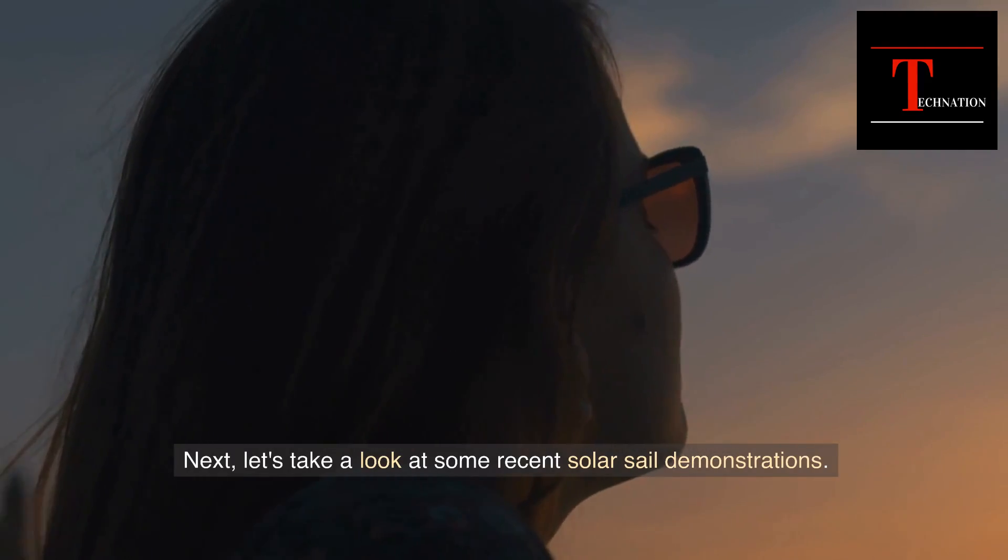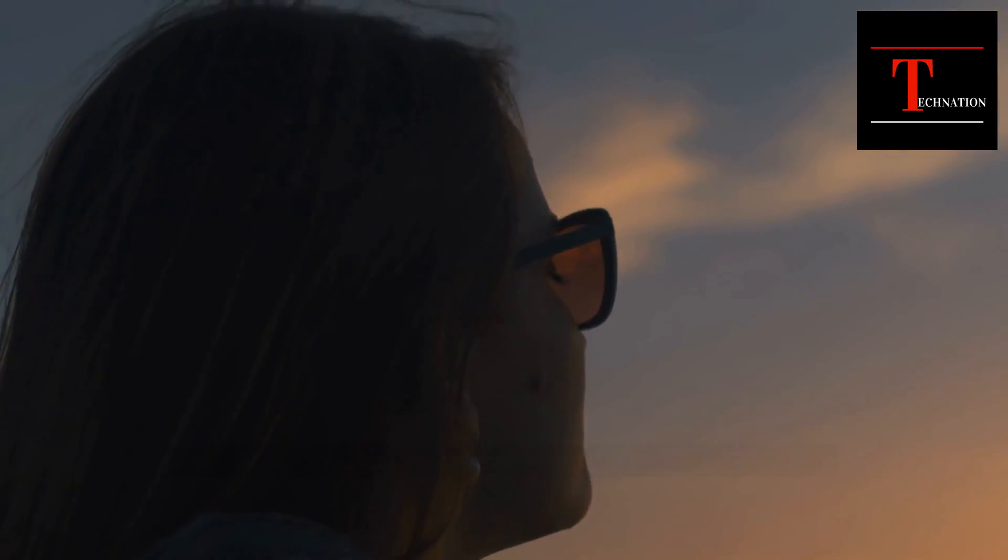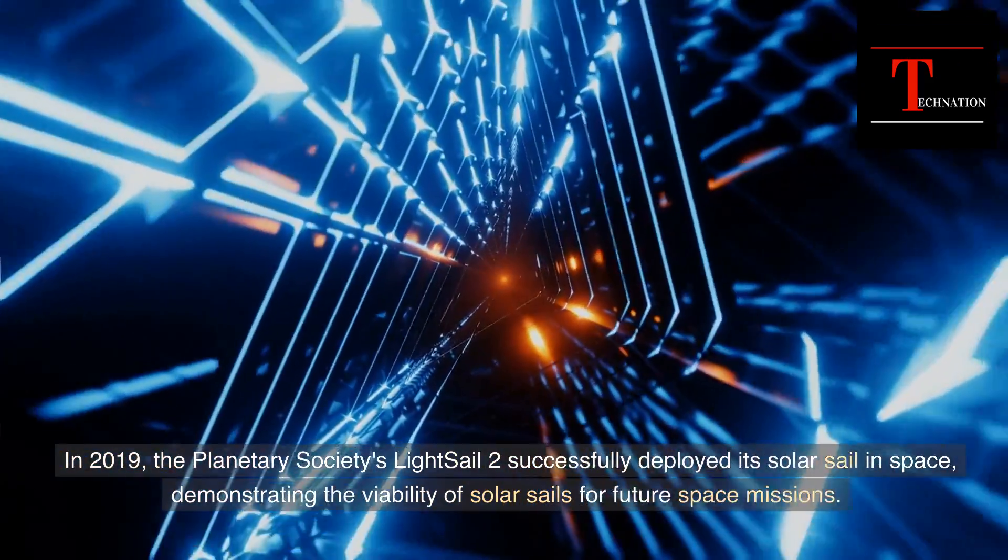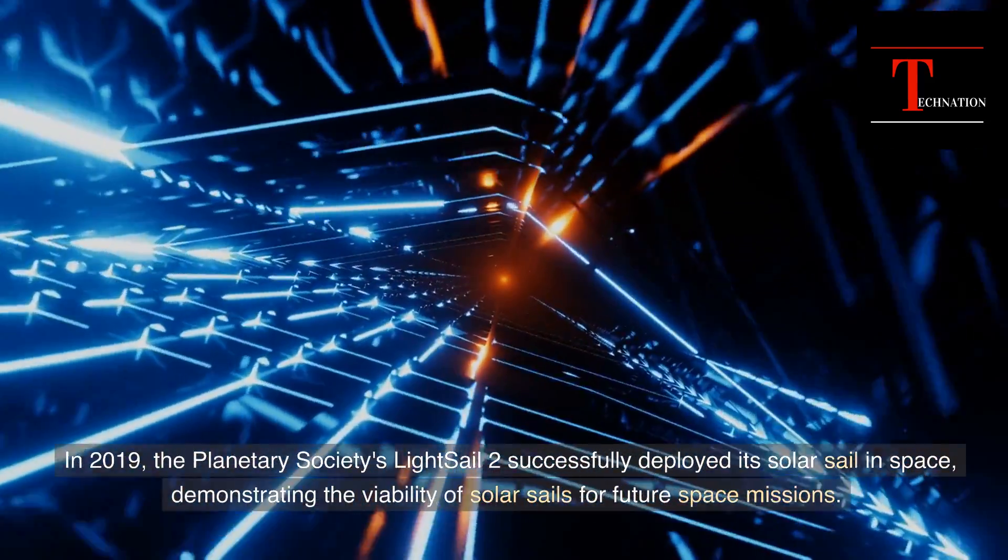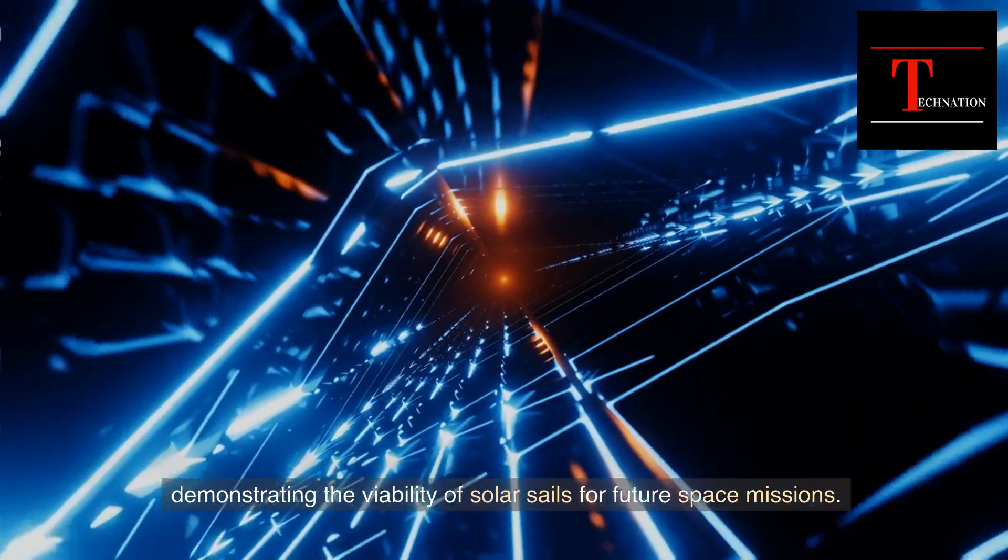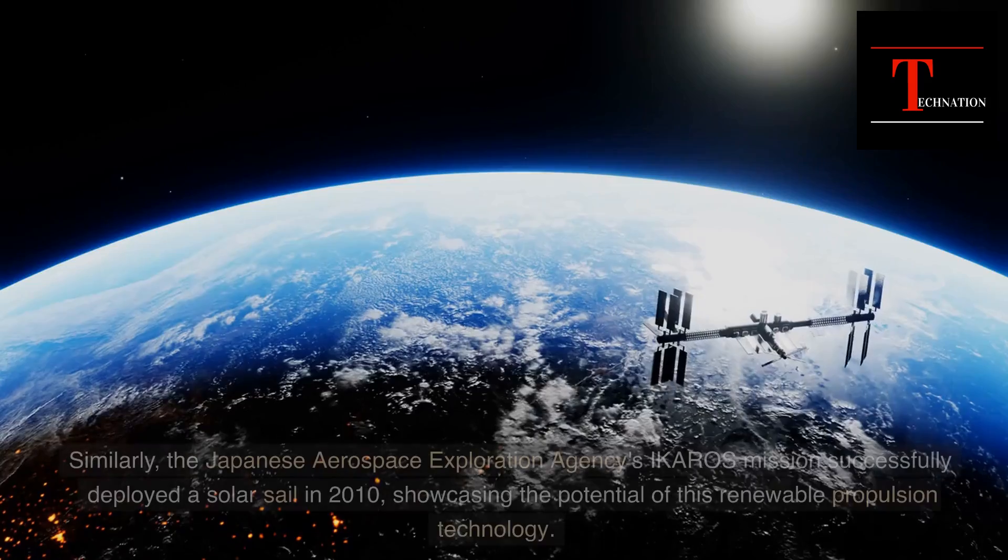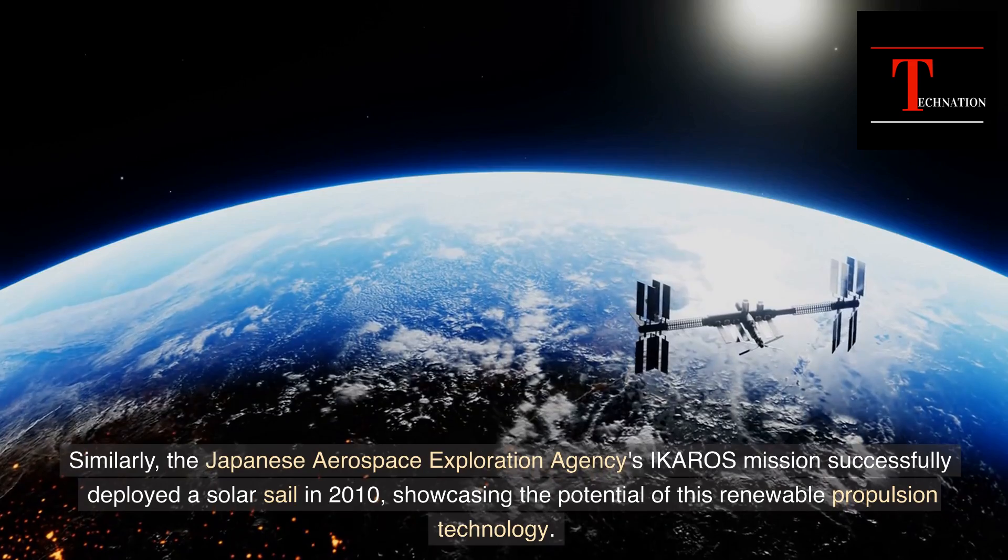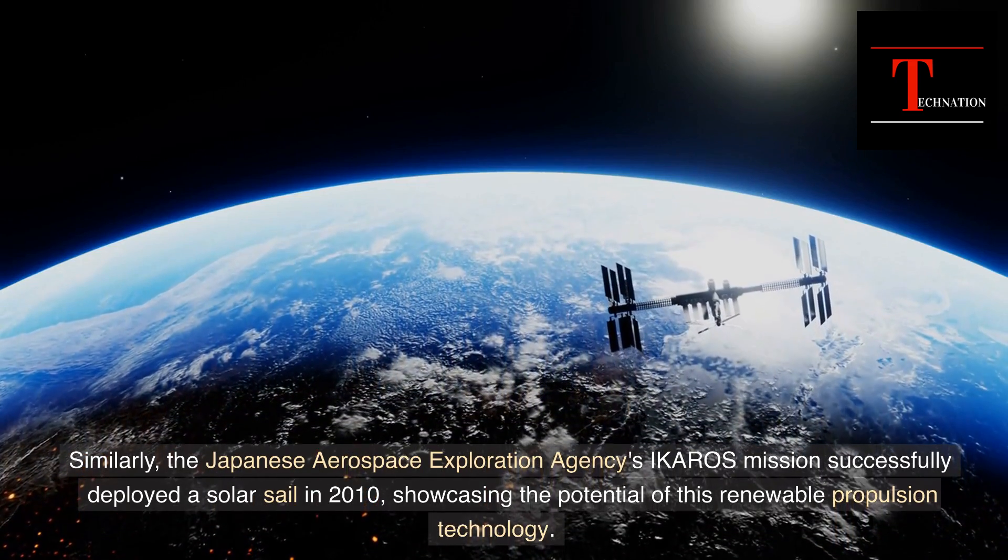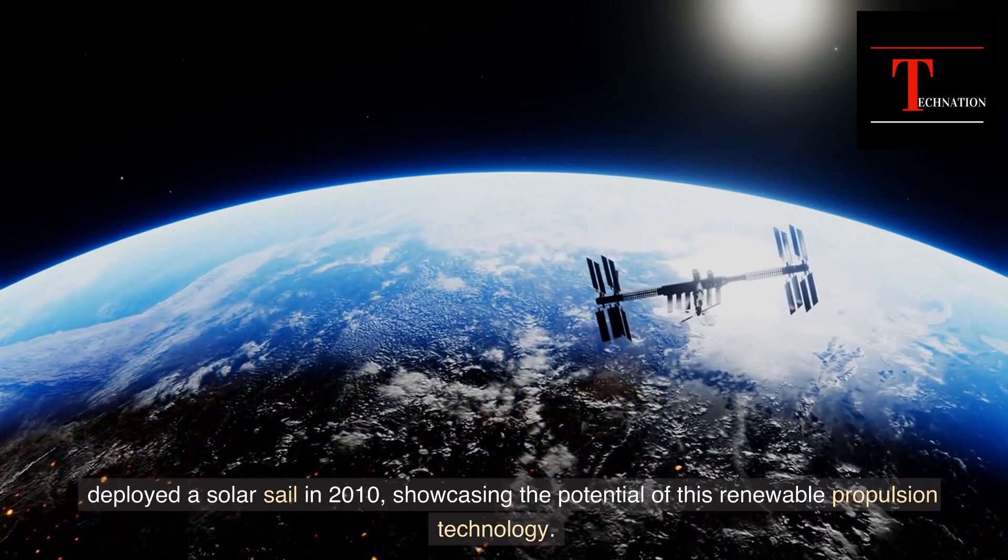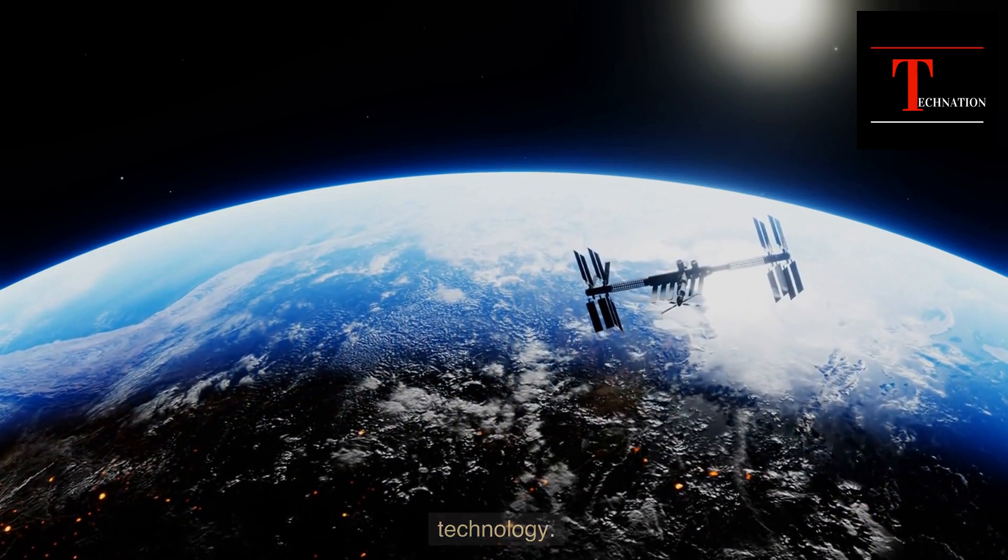Next, let's take a look at some recent solar sail demonstrations. In 2019, the Planetary Society's Light Sail 2 successfully deployed its solar sail in space, demonstrating the viability of solar sails for future space missions. Similarly, the Japanese Aerospace Exploration Agency IKAROS mission successfully deployed a solar sail in 2010, showcasing the potential of this renewable propulsion technology.